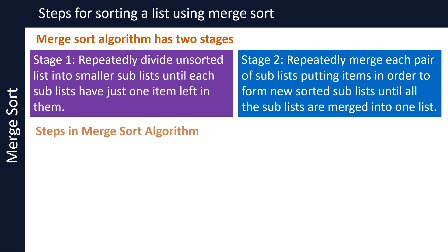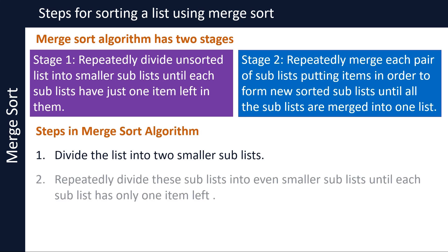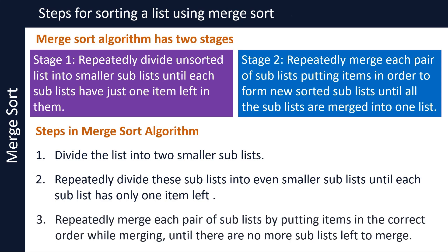The steps in the merge sort algorithm are as below. First, divide the list into two smaller sublists. Then repeatedly divide these sublists into even smaller sublists until each sublist has only one item left. Next, repeatedly merge each pair of sublists to form new sorted sublists by putting items in the correct order, until there are no more sublists left to merge. This will produce the final sorted list.